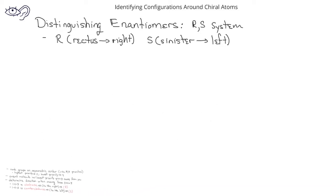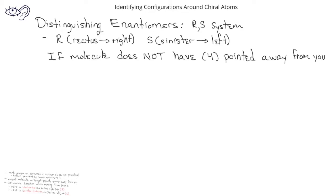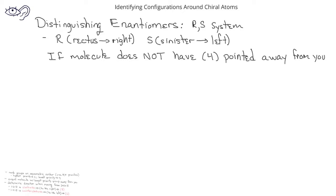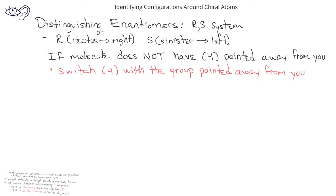What would you do if the molecule as drawn does not have the lowest group, the number 4 priority group, pointed away from you? If that's the case, you can switch the low priority group, number 4, with the group that is currently pointed away. When you switch two groups on an asymmetric center, you're essentially switching it to the other configuration, to the other enantiomer.